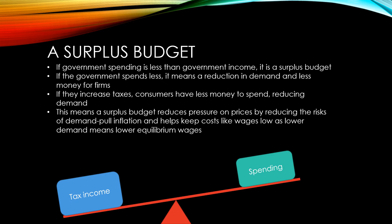A surplus budget can reduce pressure on prices by reducing the risks of demand-pull inflation. It also helps to keep costs like wages low, as lower demand means lower equilibrium wages. These reduced costs can help UK firms become more competitive internationally, increasing our exports and improving our balance of payments. So a surplus budget is good for working towards two of the government's goals: a better balance of payments and low inflation.